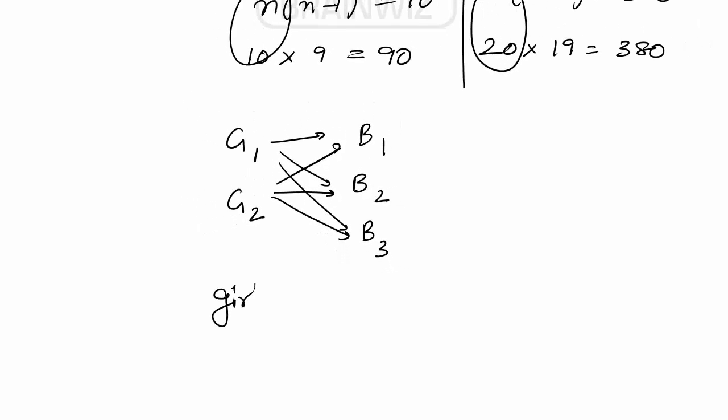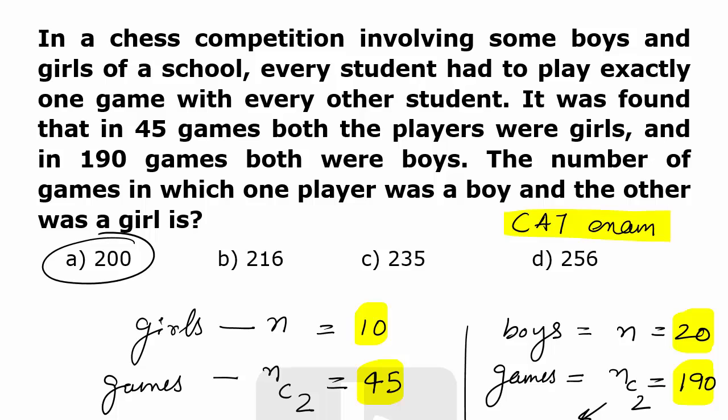So students, it is very simple. We have to see how many girls are there, that has to be multiplied by how many boys. So we have got 10 girls and 20 boys. If each girl is playing a match with each boy it will be resulting as 200 games. So option A is the perfect answer.